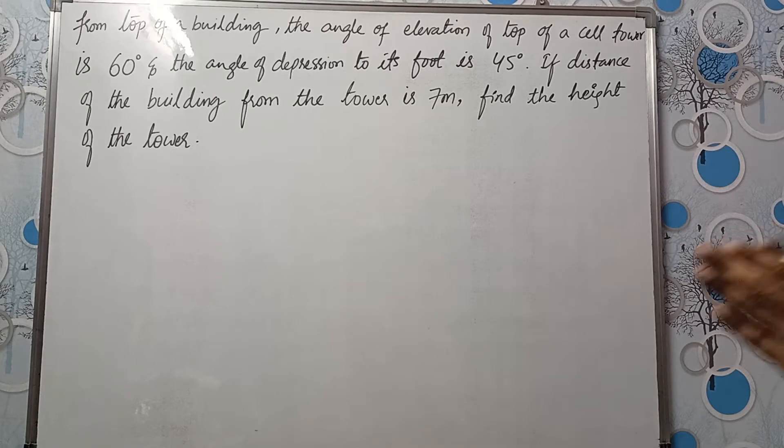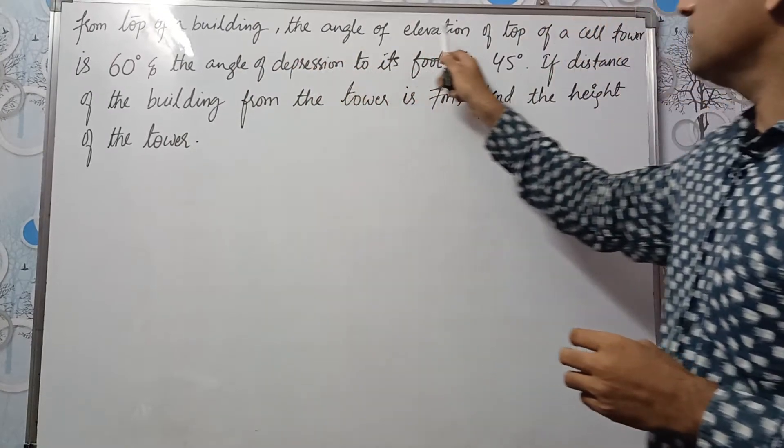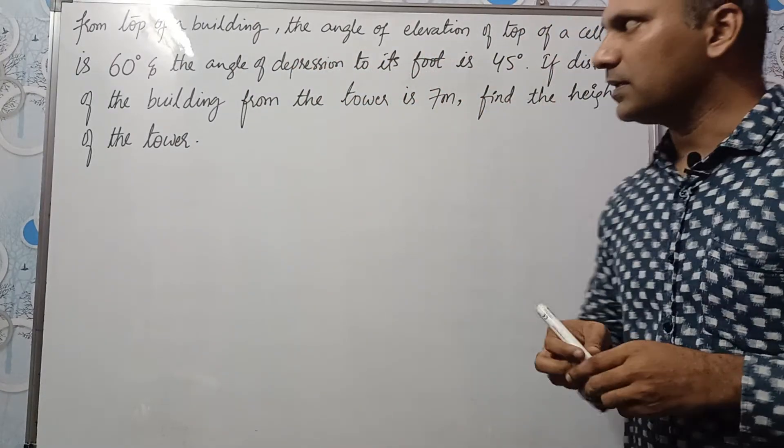Hi students, in this video we will solve this problem. From top of a building, the angle of elevation of top of a cell tower is 60 degrees.